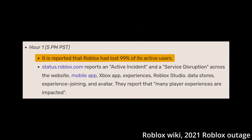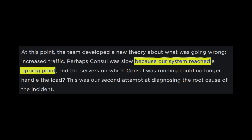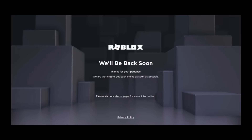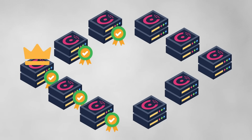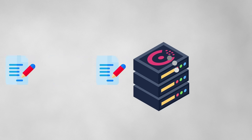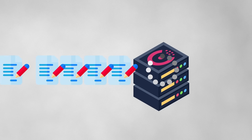The team then suspected that perhaps they had reached the tipping point of Consul's current hardware. Given the severity of the incident and the fact that no one was online anyways, they decided to replace all the Consul nodes with new, more powerful machines. However, by 7pm after the upgrade, the Consul cluster still could not keep up with writes and had the same elevated write latency.